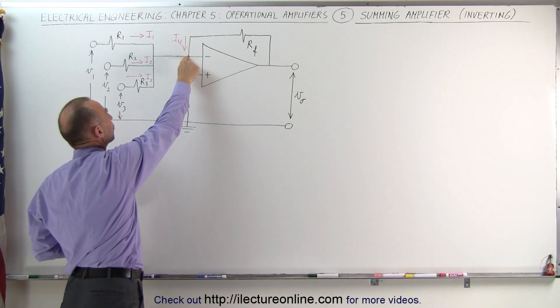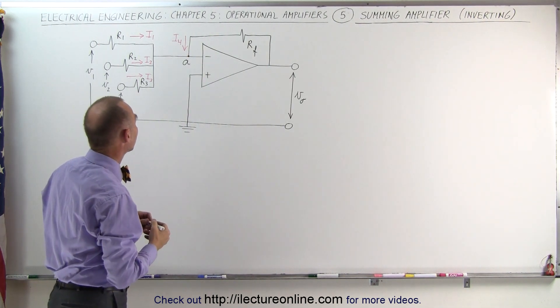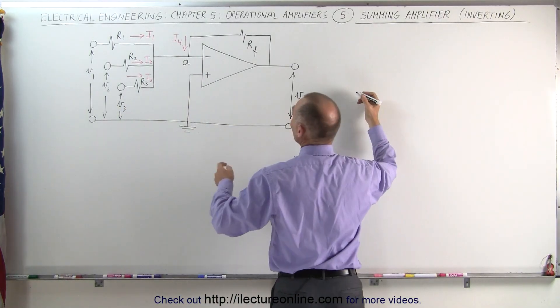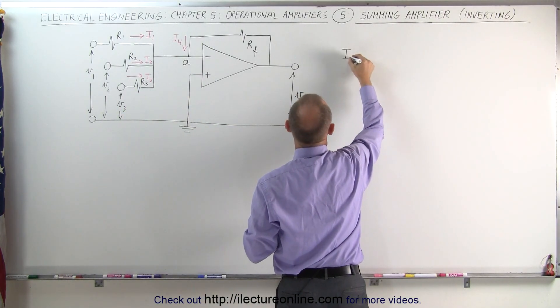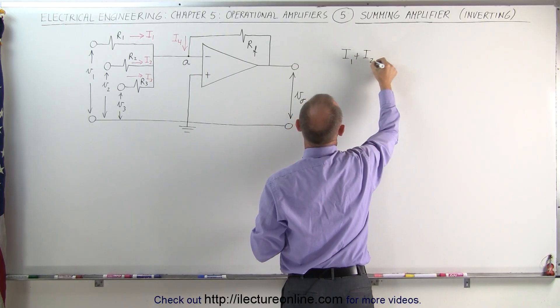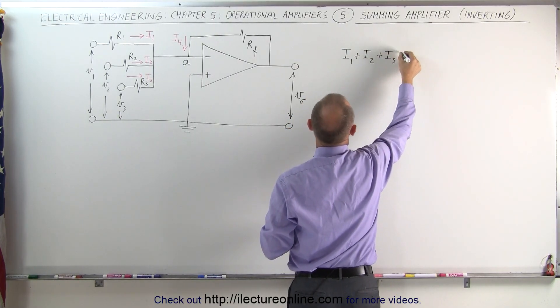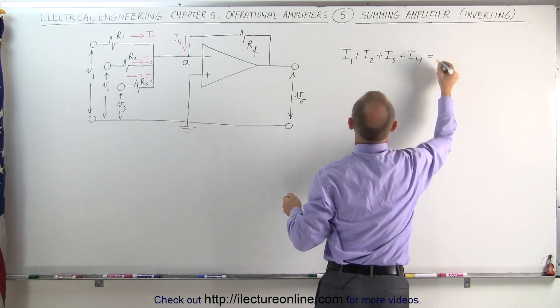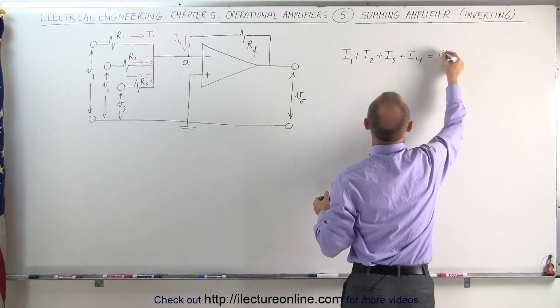What we're going to do is sum all the currents entering the node A here. So when we do that we can say that I1 plus I2 plus I3 plus I4, those are the four currents entering the node, equal the current leaving the node which in this case will be zero.